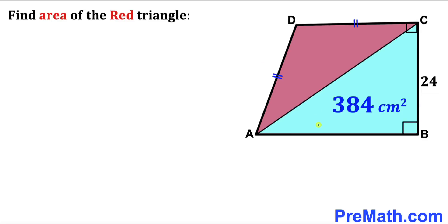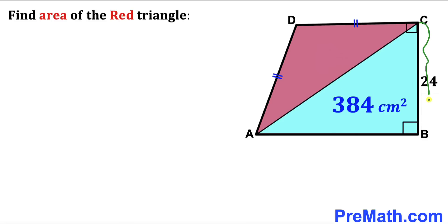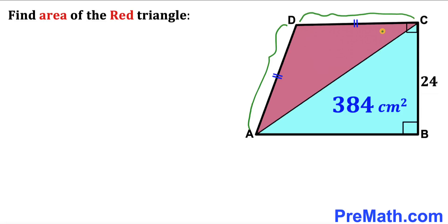In this video we have a trapezoid ABCD that consists of two triangles: a blue right triangle and a red isosceles triangle, as shown in the diagram. The area of the blue triangle is 384 cm², side length BC is 24 cm, and side AD equals side CD. Our task is to calculate the area of the red shaded triangle.